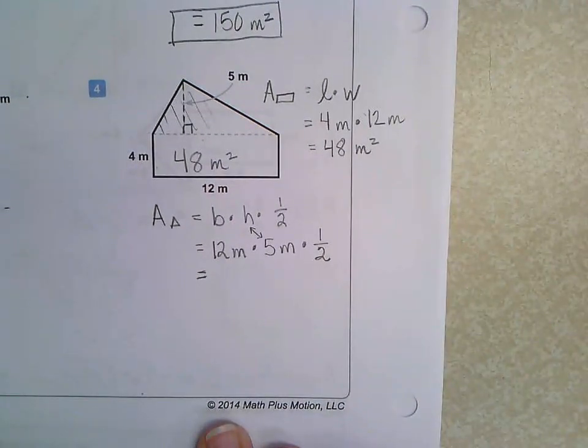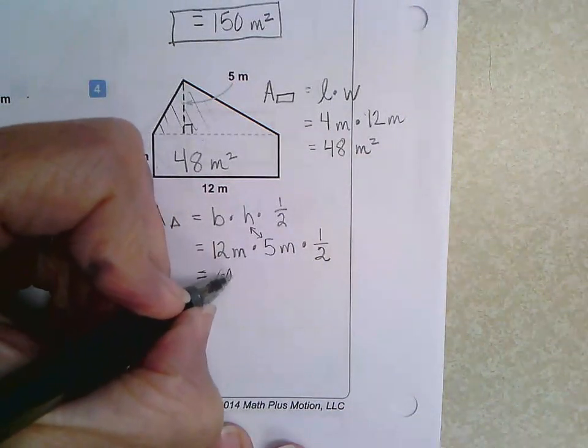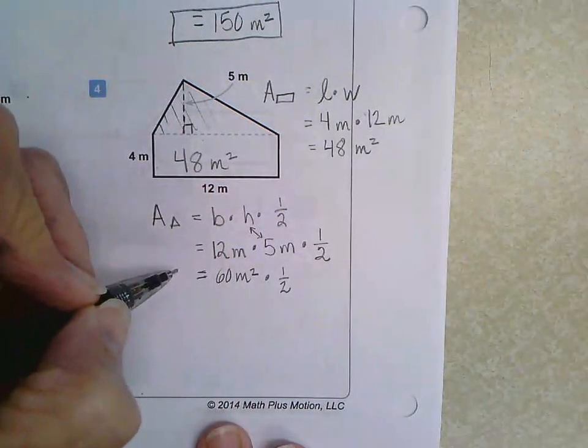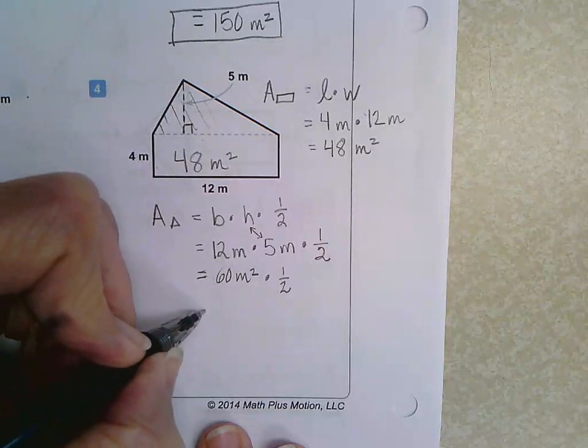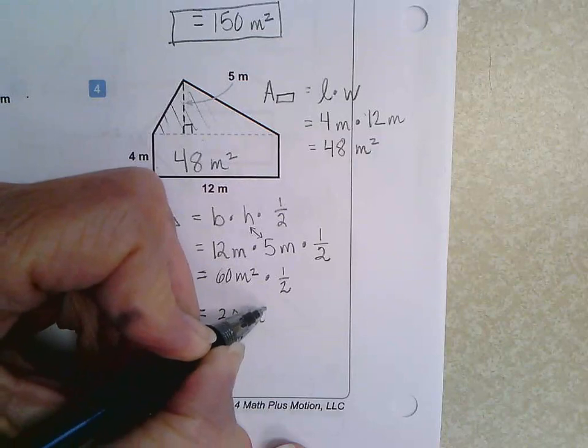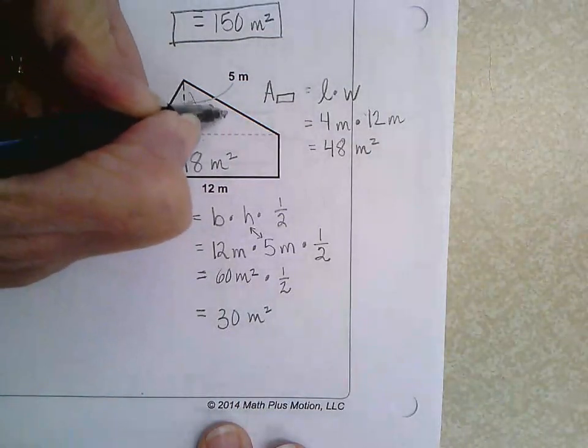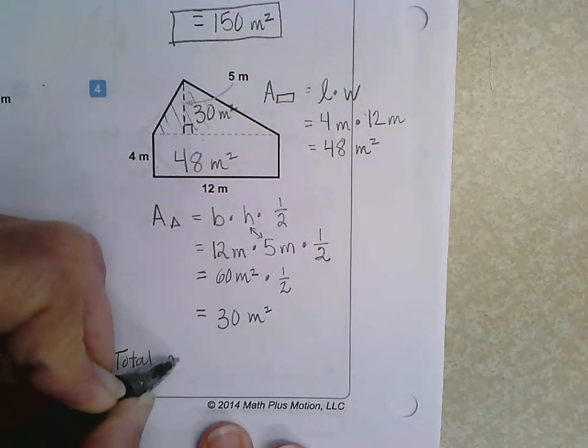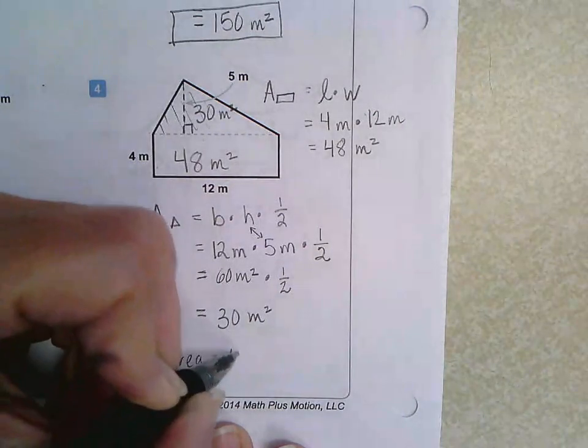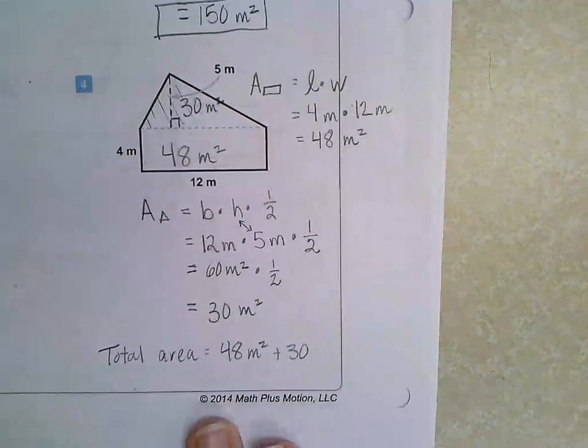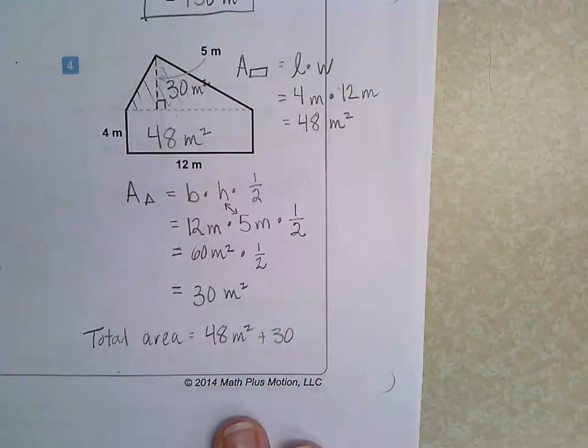Well anyways, that equals 60 meters squared. And then we have to take 60 meters squared times one half, and that equals 30 meters squared. Okay. So now we have to take 30 meters squared plus 48 meters squared, and that equals 78 meters squared. Wait, why would we take... oh, half. You have to take half. Okay.